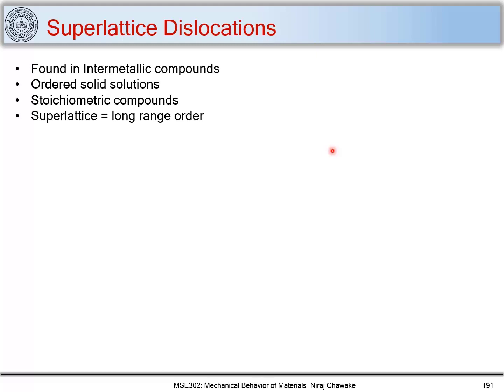Let me introduce super lattice dislocations, which we find in intermetallic compounds. These intermetallic compounds are nothing but ordered solid solutions and are sometimes called stoichiometric compounds, because they form at certain compositions of elements.